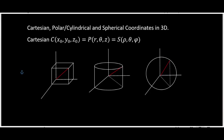We are considering Cartesian, polar, cylindrical, and spherical coordinates in three dimensions. Consider a box where this length is x₀, from here to here is y₀, and this length is z₀. So this point here I call C(x₀, y₀, z₀) — this is the Cartesian system.